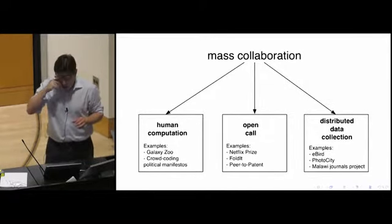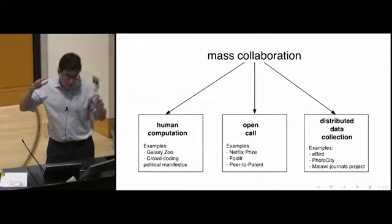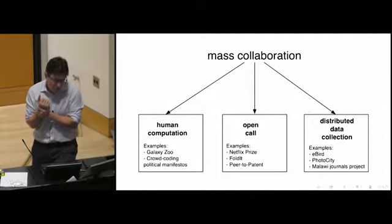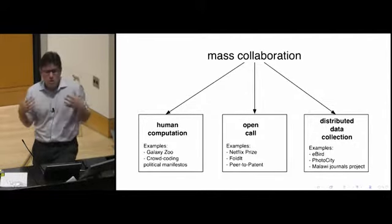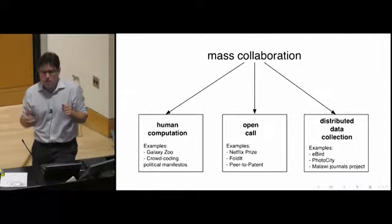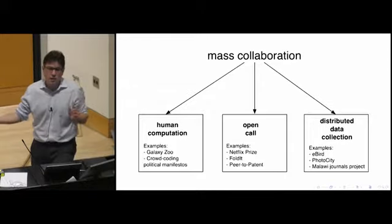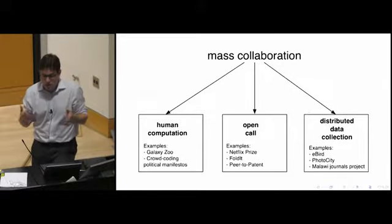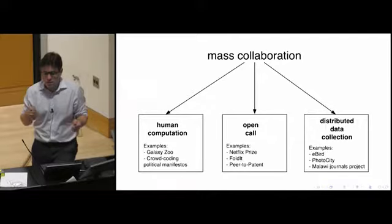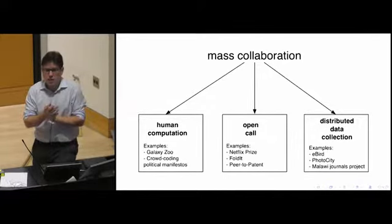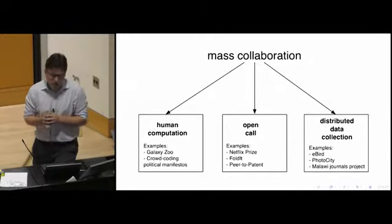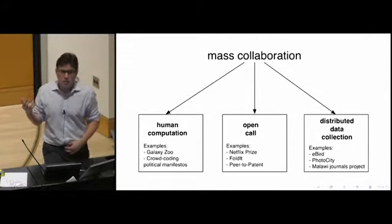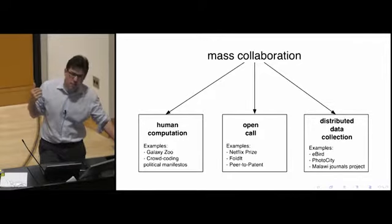I like to think about many different ways that you can organize the space of possible mass collaborations. The way I've chosen to organize them is into three buckets. Human computation problems are those where the task is actually relatively easy, but the difficulty comes from the scale of the task. A great example of this is Galaxy Zoo, where it was relatively easy for an astronomer to label a galaxy as being either spiral or elliptical, but the difficulty came because they had a million galaxies.